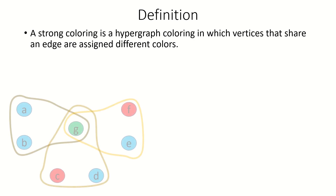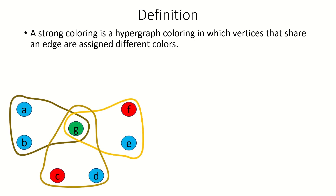To demonstrate, the coloring shown here is not a strong coloring because vertices A and B share an incident edge and were assigned the same color blue.